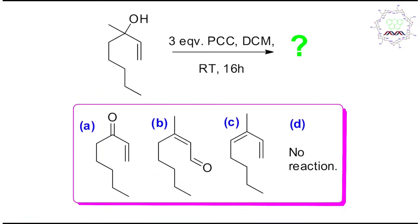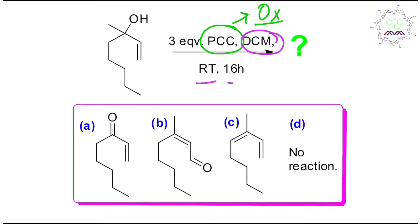I believe you have tried by yourself, so it's my turn to give you the right answer. As usual, I request you students to please look at two things properly: first, what is the reagent and what is the reactant. Now if you look at this reagent, there are 3 equivalents of PCC or pyridinium chlorochromate. This PCC is actually a selective oxidant, DCM is the solvent, and you can see room temperature for 16 hours. So you can consider this is actually a milder reaction.